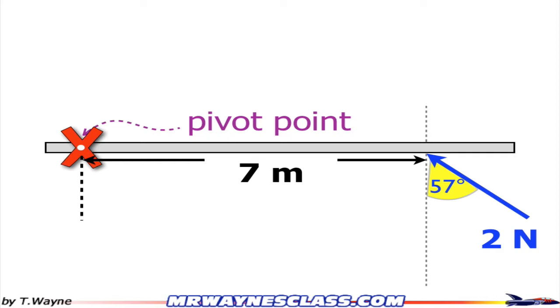The pivot point is sometimes referred to as the axis or axis of rotation. Now I've got to find the torque. Torque is defined as the perpendicular component of force to the displacement.